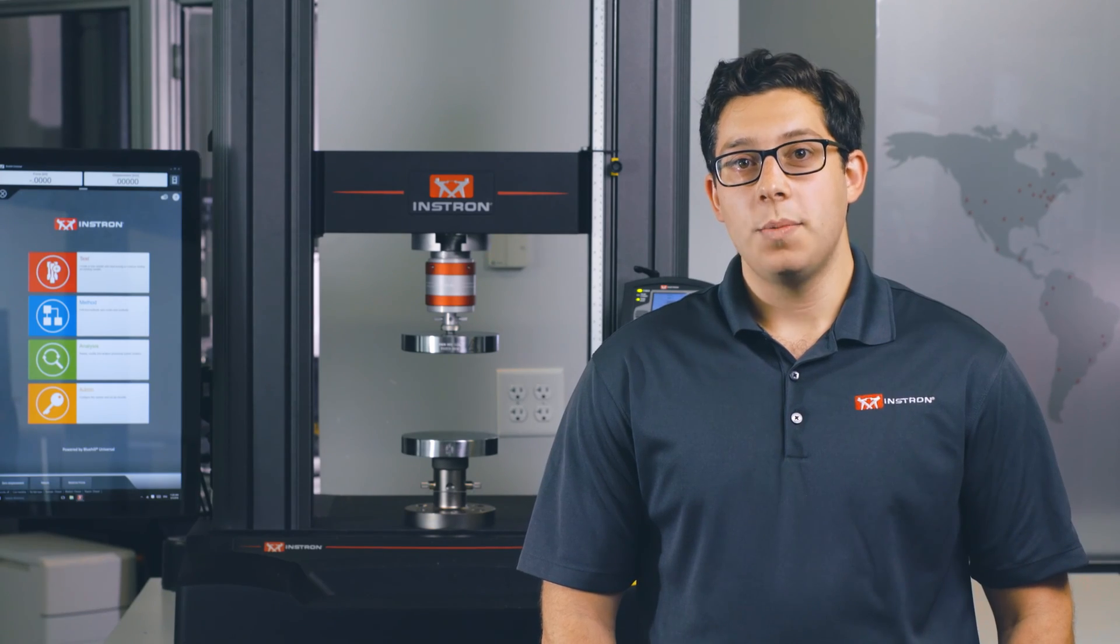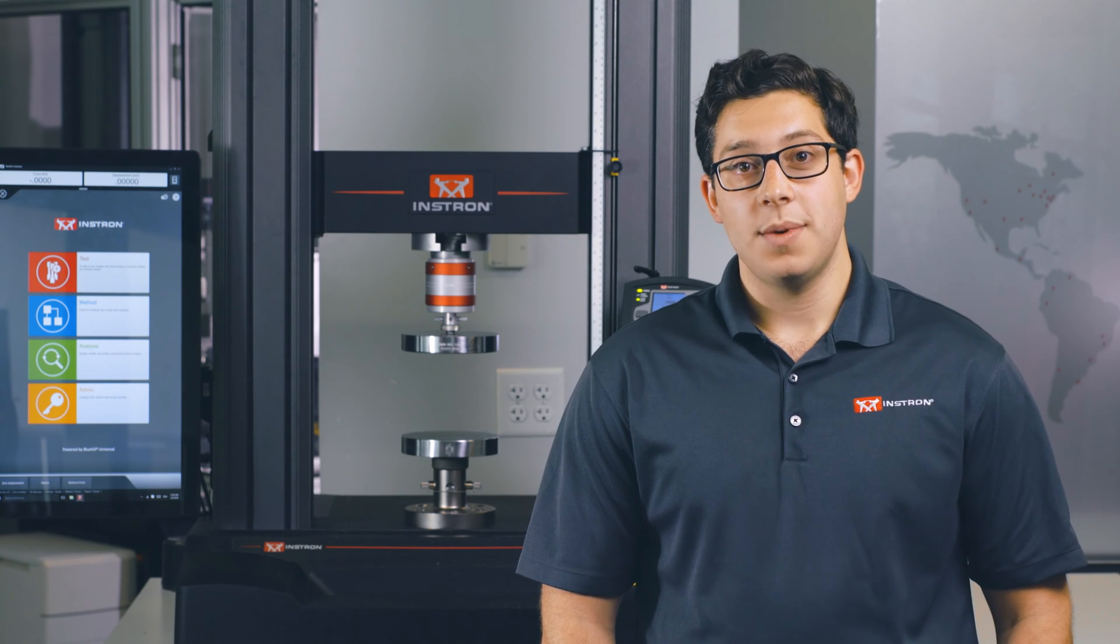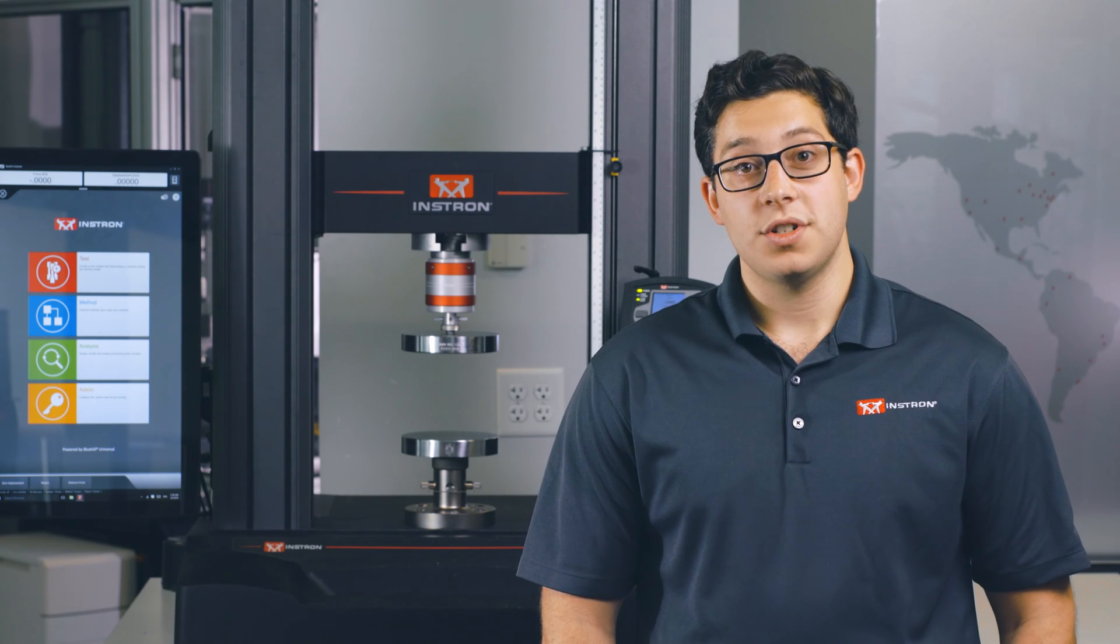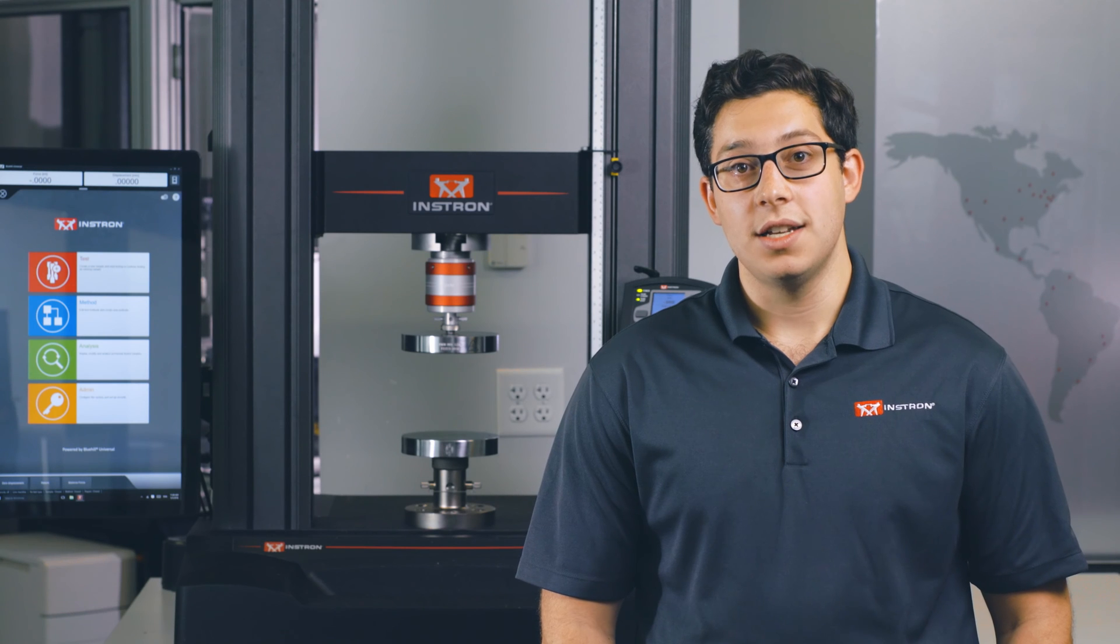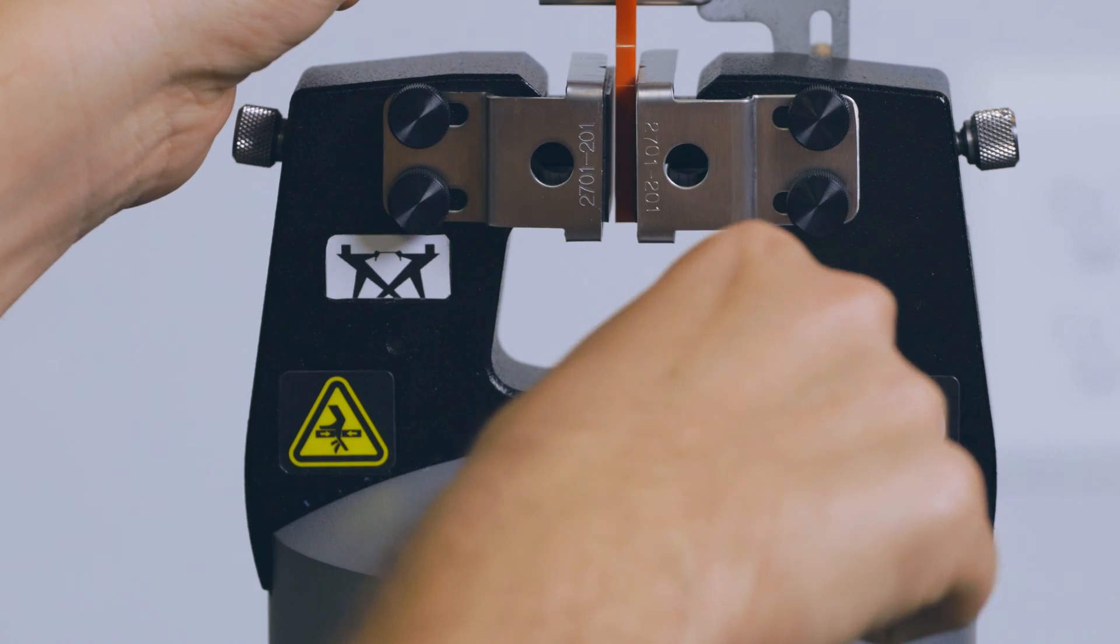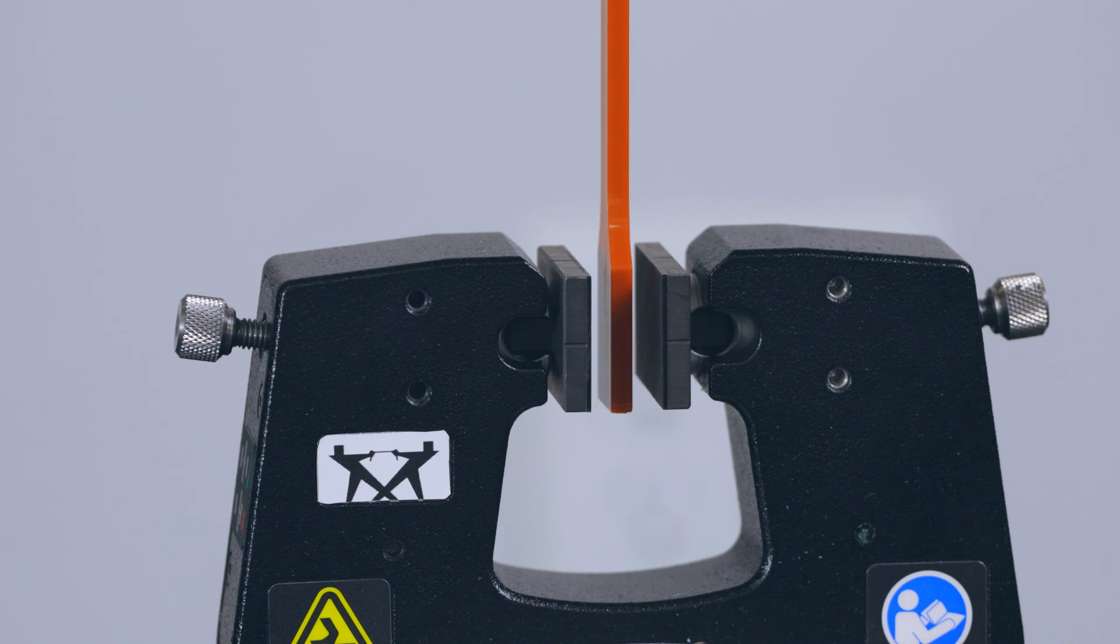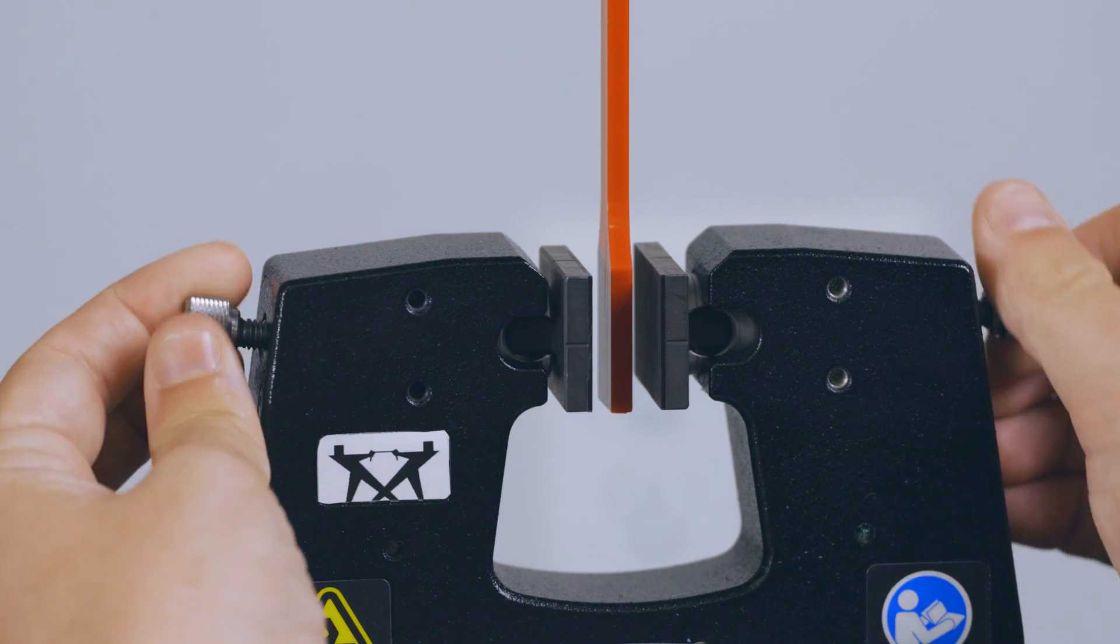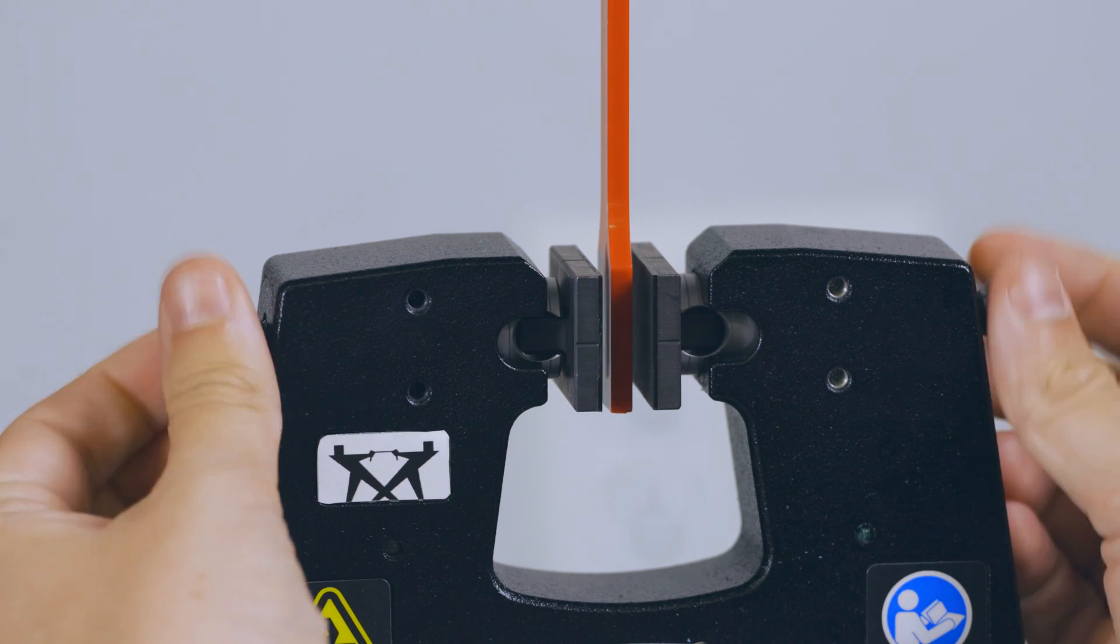Pneumatic grips have a wide opening range to accommodate a variety of specimen thicknesses. It is important to close this gap if it is not needed to eliminate the possibility of a finger pinch. You can do this in one of two ways. First is the utilization of jaw face shields. If you don't have these, you can use the knobs on the side of the grips to manually bring the faces closer together.